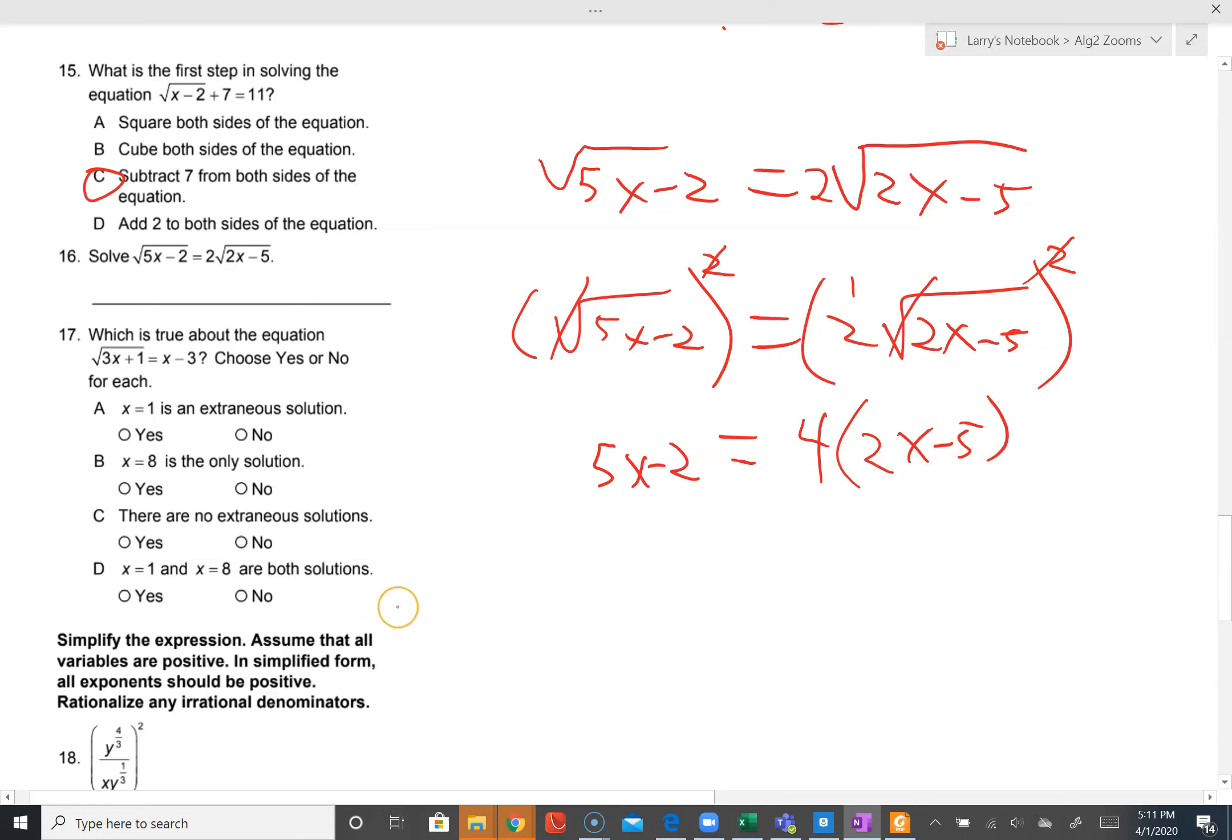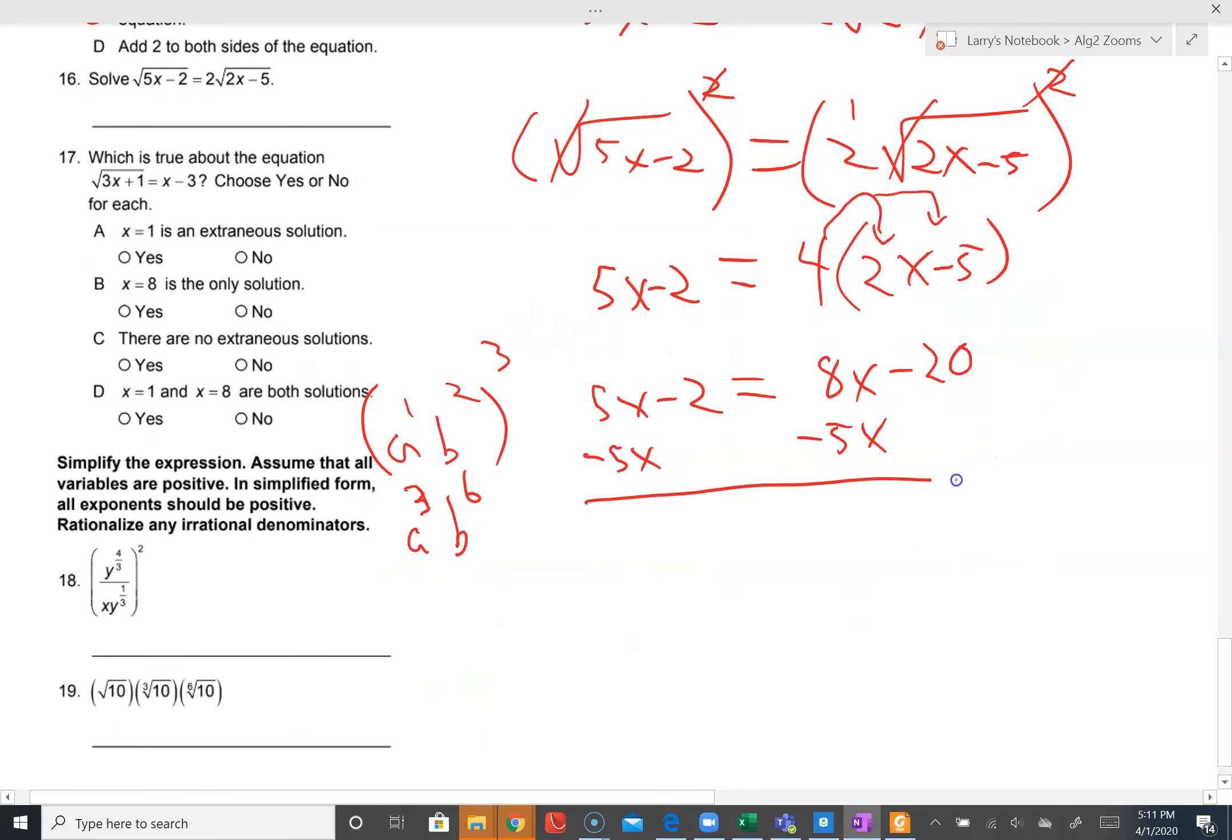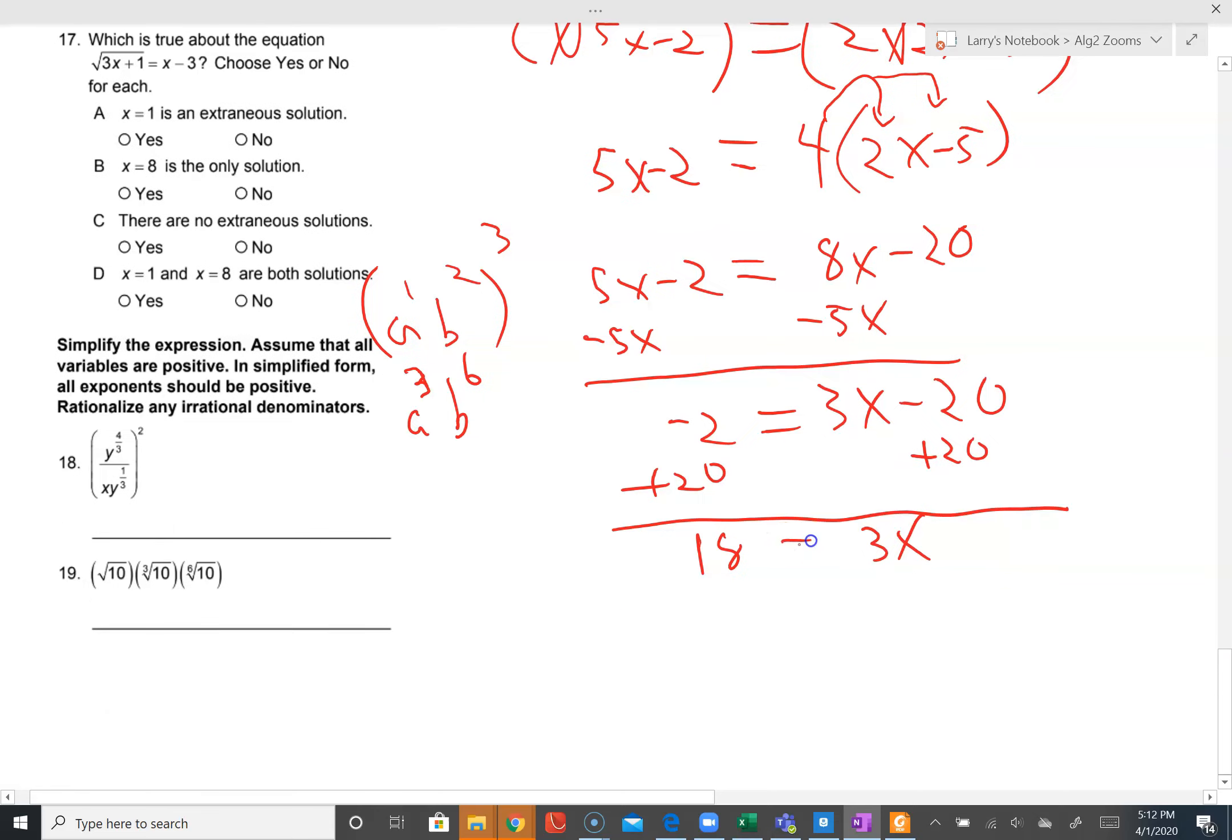This is the power rule. The power rule says we have a product, the product was two and that radical expression. The radical expression comes out, the two became four, but it's still multiplied together. So now we need to distribute the four. We have eight x minus 20. On this side we have five x minus two. Subtracting five x on both sides yields negative two equals three x minus 20. Add 20 on both sides, three x equals 18, dividing by three, x is six.